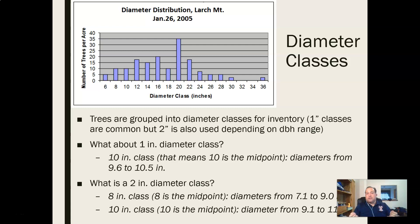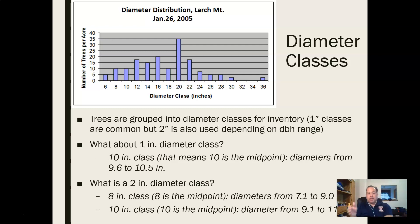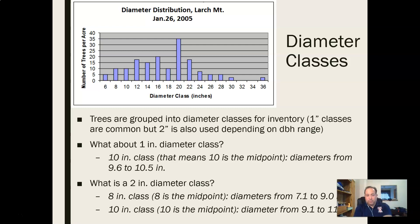In two-inch classes, the class number is the midpoint and the range goes from point one to point zero. The eight-inch class runs from 7.1 to 9.0 — eight is in the middle. You never have odd-numbered two-inch classes, as seen in the chart showing six, eight, ten, twelve, fourteen. A 9.4-inch tree falls in the ten-inch two-inch class, but would be a nine-inch tree in one-inch classes. For the twelve-inch two-inch class, the range is 11.1 to 13.0 — anything in there is called a twelve-inch tree.